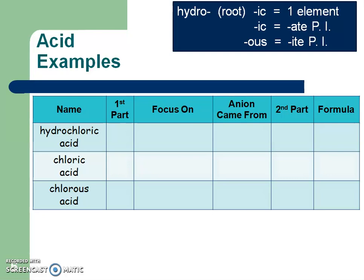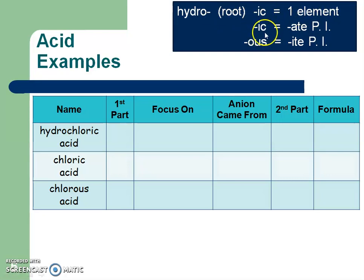I have two example boxes because these are a little bit trickier, so I wanted to give you more examples than just a couple like we did in the previous videos. My strong suggestion would be to listen to the entire chart and then pause and write things in. As a reminder: if the name is hydro, root of an element, ic acid, it came from one element. If it only ends in ic, it came from an ate polyatomic ion. If it ends in ous, it came from an ite polyatomic ion.